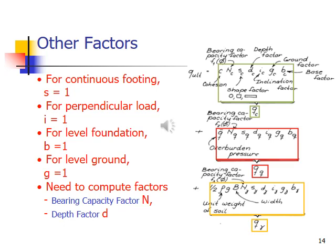Apart from this, for continuous footing, then S is equal to 1. For perpendicular load, I is equal to 1. For level foundations, base factor is 1. For a level ground with no inclination, G is equal to 1. Need to compute factors when they are not continuous, not perpendicular, not level foundation, and their ground level is not horizontal.